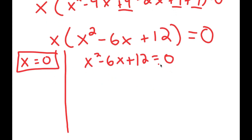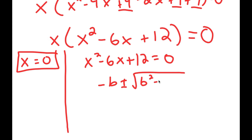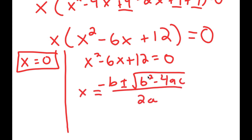And x² minus 6x plus 12 equals 0. To solve this, we're going to use the quadratic formula, which is negative b plus or minus the square root of b² minus 4ac, all over 2a. So in this case, a is 1, b is 6, and c is 12.